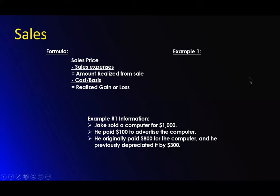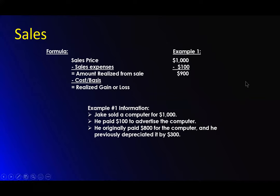Let's take an example. Jake sold a computer for $1,000. He paid $100 to advertise his computer and he originally paid $800 for the computer and he has already depreciated it by $300. The sales price is $1,000. His sales expense was the $100 he put in to get it advertised. That means he got from the sale $900. His original cost — the $800 he originally paid — minus what he's depreciated, because he's gotten that $300 back in deductions, so his cost now is $500. That's what he has left in value in the property. So his amount of gain is $400 on this computer. It's a positive amount, so it's a gain on the sale.